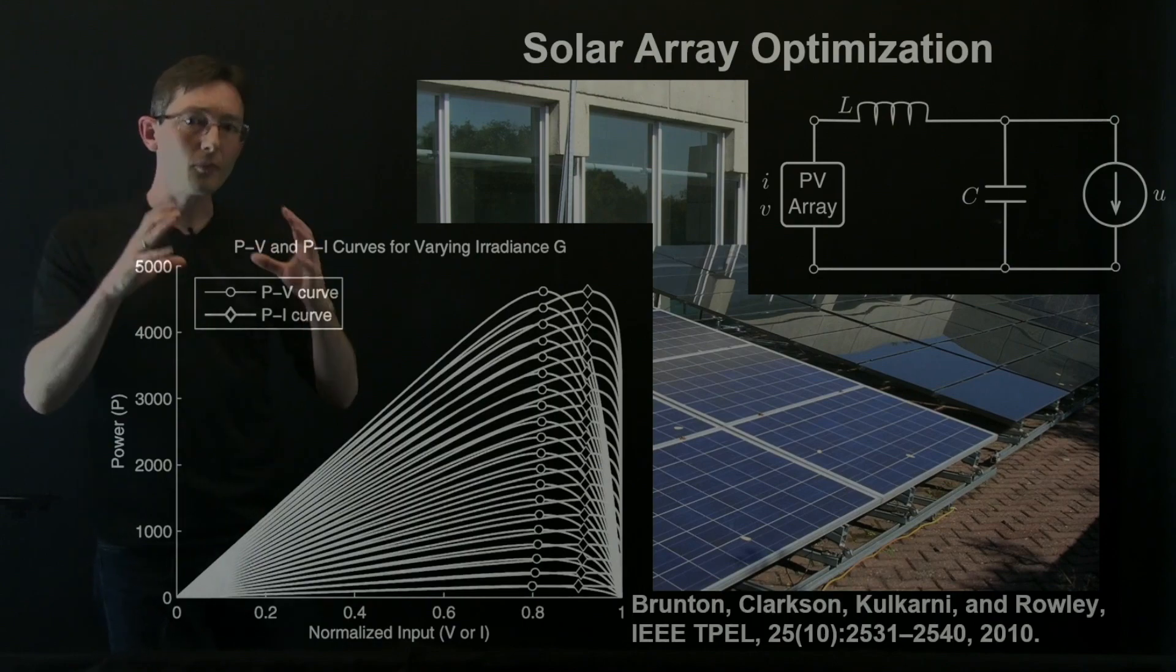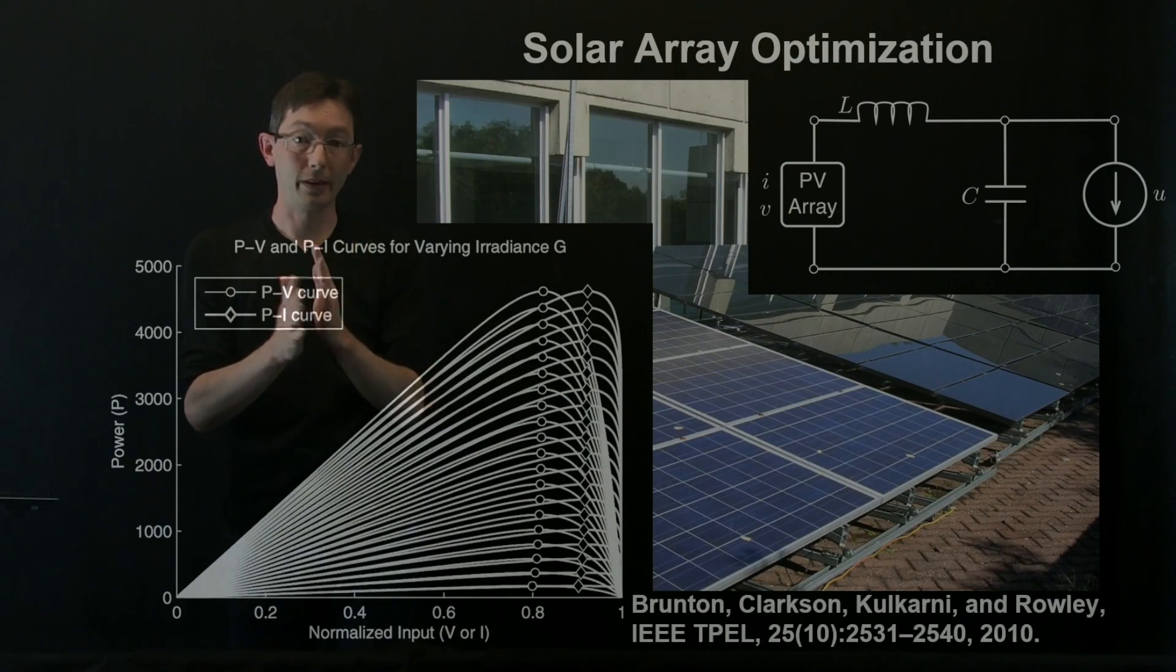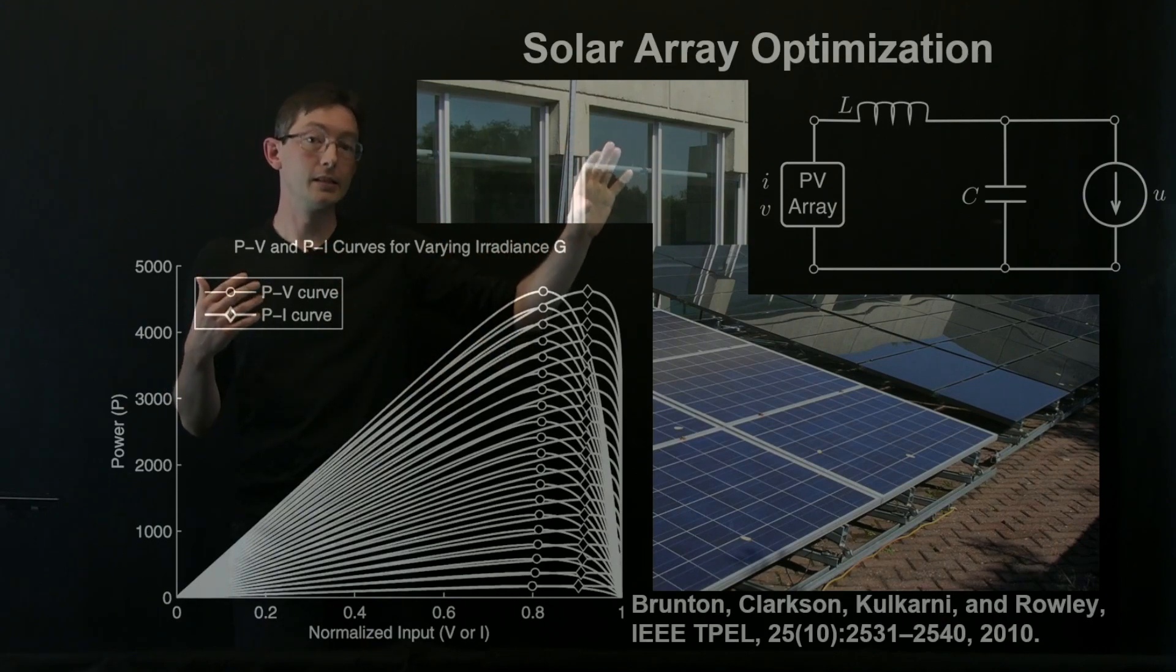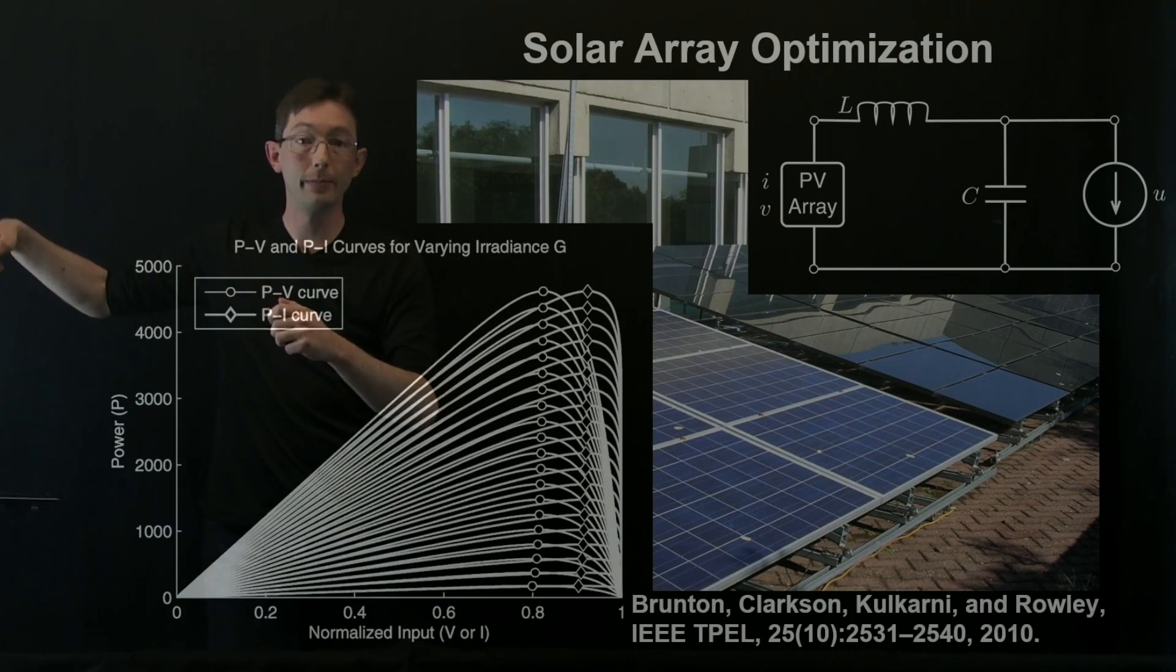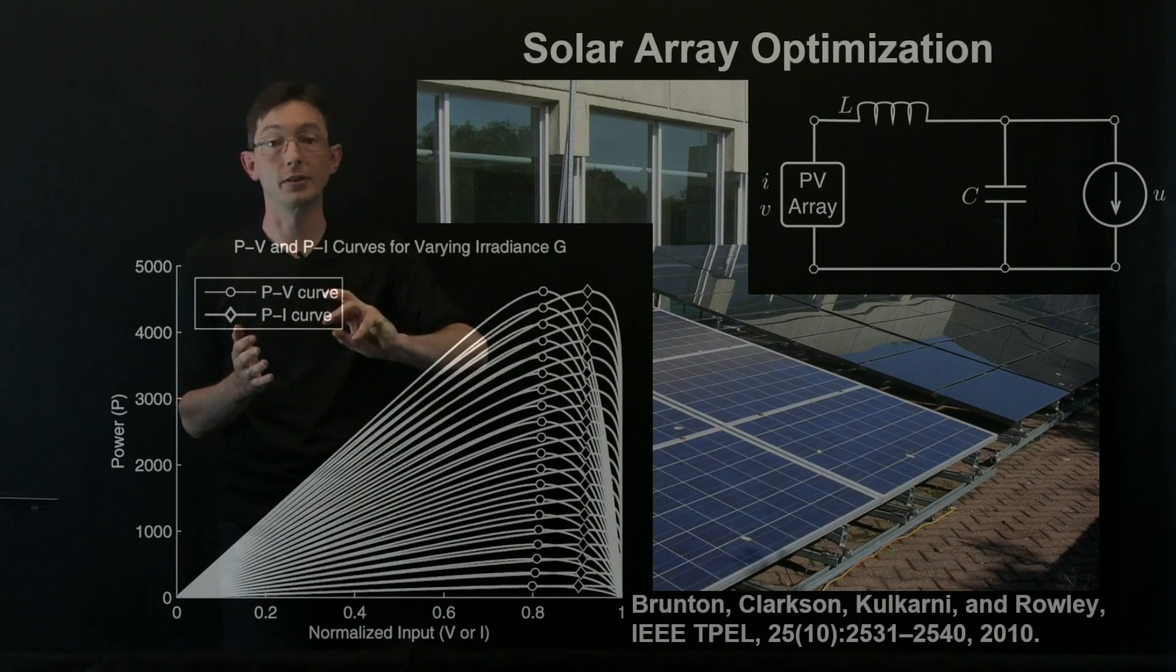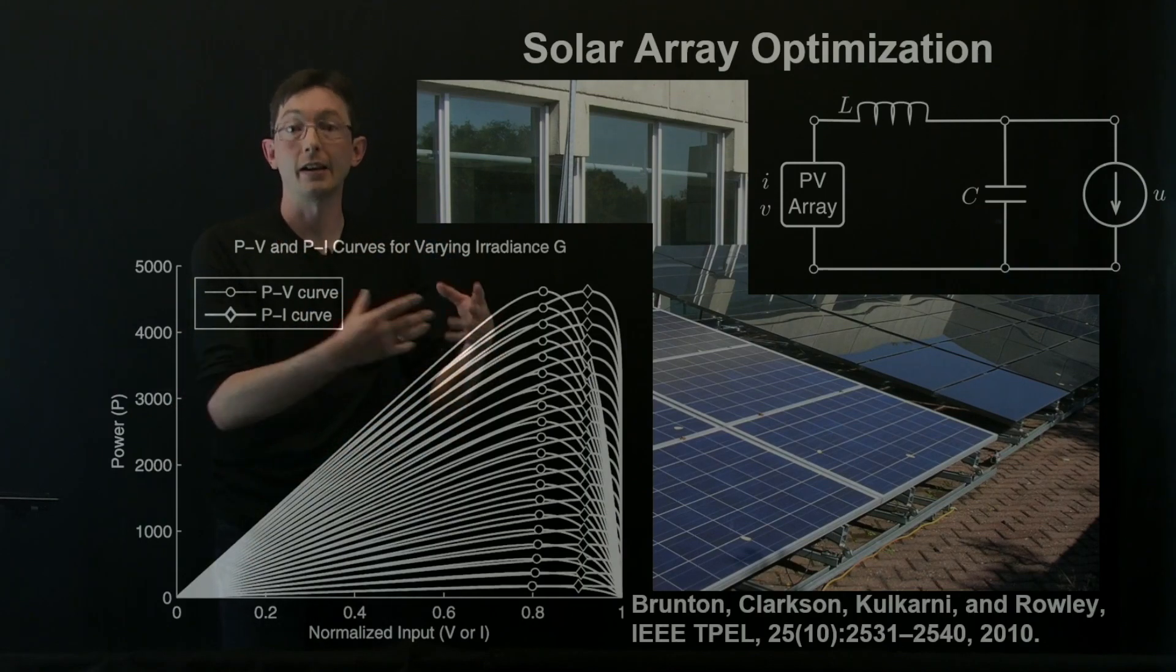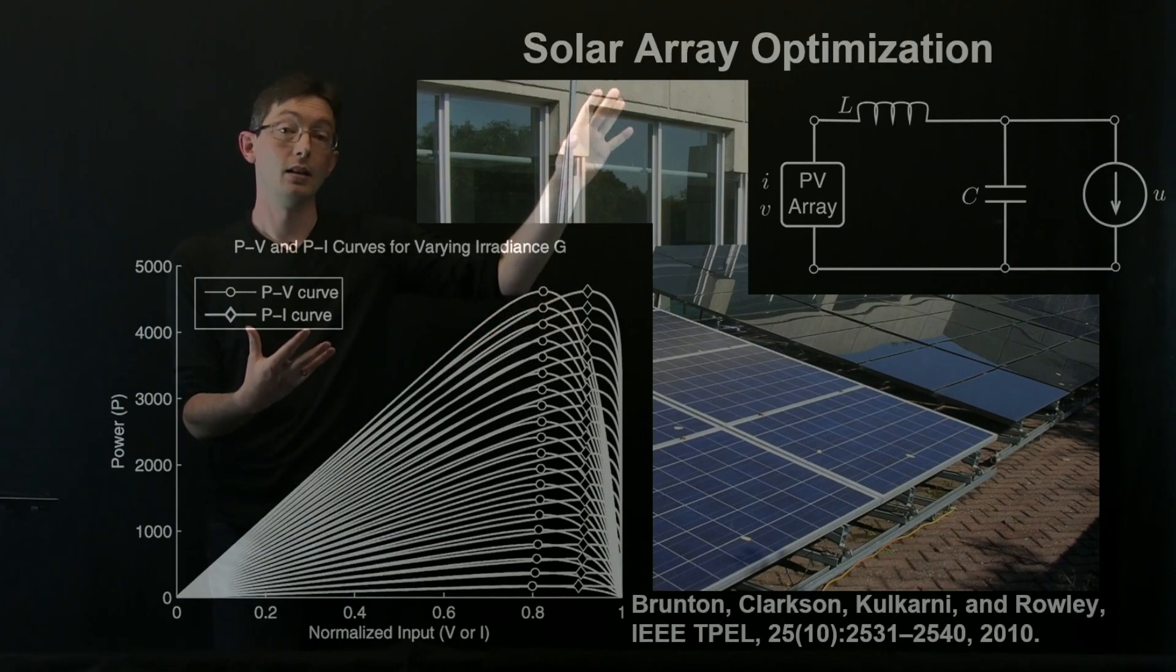Now again, this grid tie inverter that we were using at the time, by nature of the fact that it's chopping this up into a 60 hertz AC sine wave means that we get this natural sinusoidal ripple on top of our control signal and we can measure did our power go up or down based on those swings in the rippling input signal. And so we use that to design an extremum seeking controller to maintain peak performance in this array.